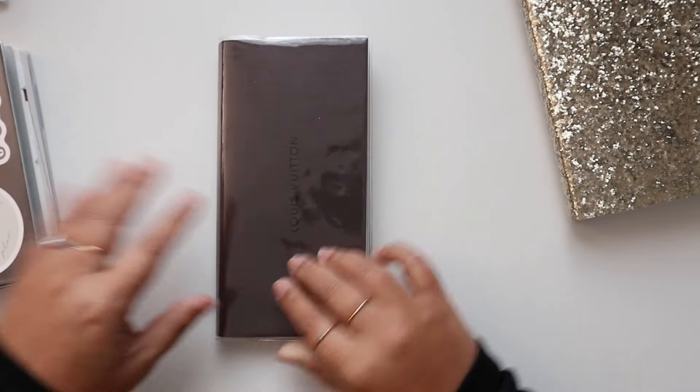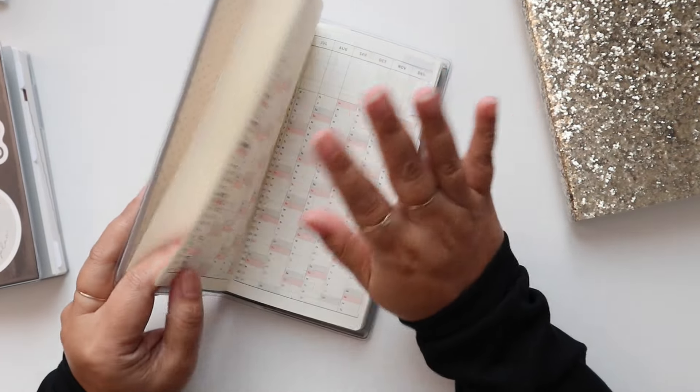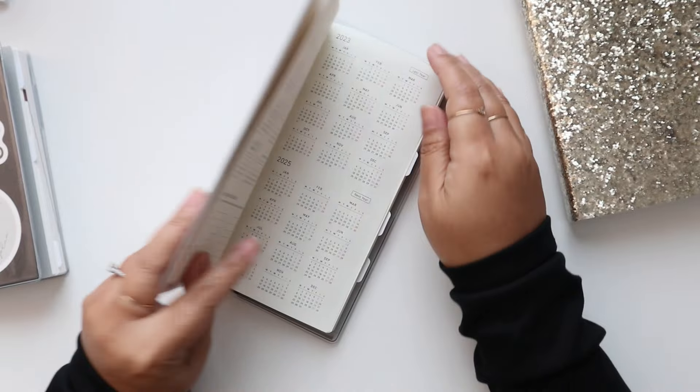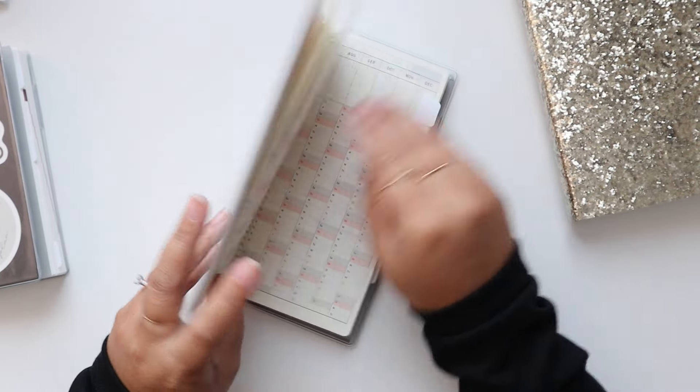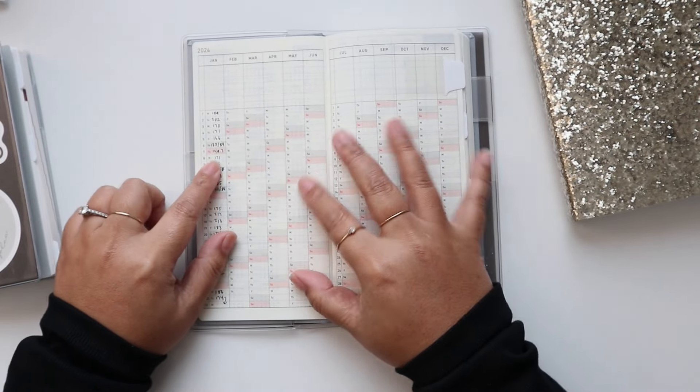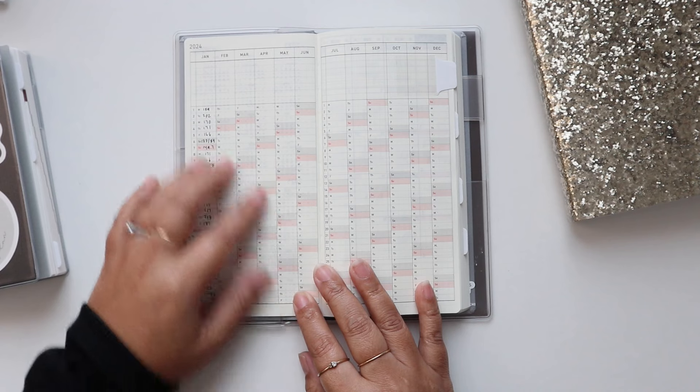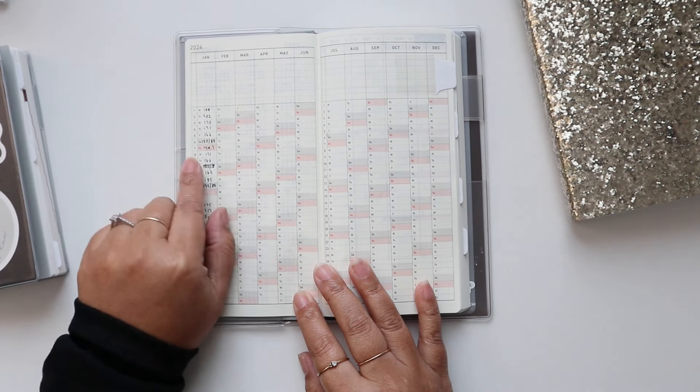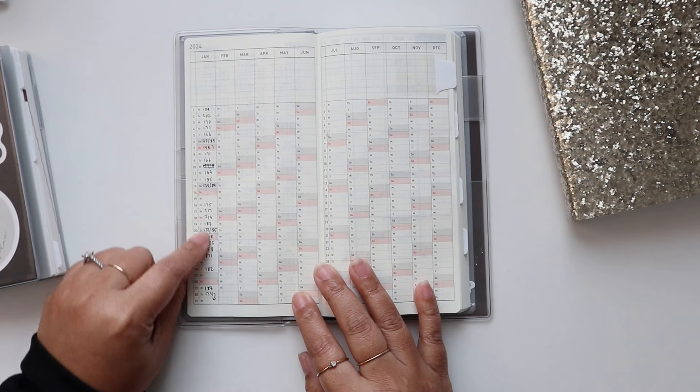My other planner here is my wellness planner. This one is really plain, I don't even put deco in here or anything. It's really just for documenting and I could be messy. Like here you see I scribbled things out. This perpetual calendar is for tracking certain health stats.